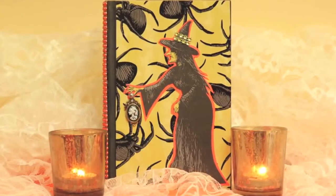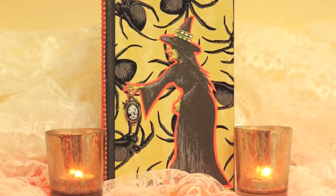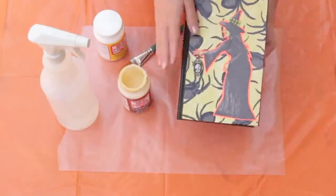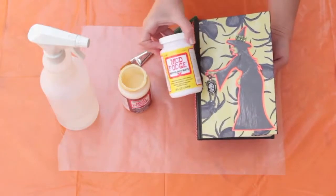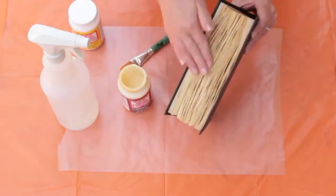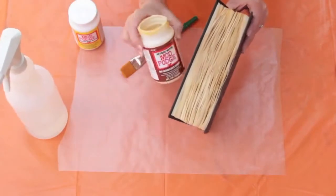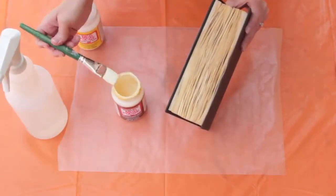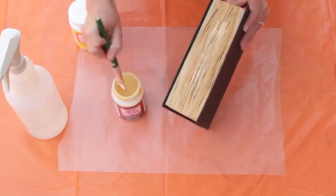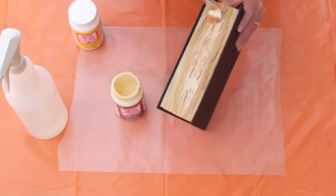To make our spell book, we altered a thrift store book. We used Mod Podge and scrapbook paper to get the decorative front. For the edges of the paper to get that spooky look, we sprayed them with water and let it dry. And that antique look is done with Mod Podge Antique. Just brush it right on and it will yellow up your pages.